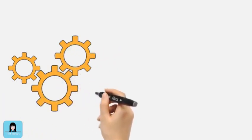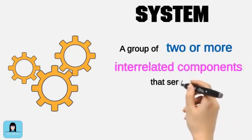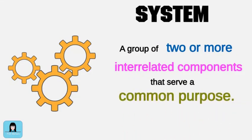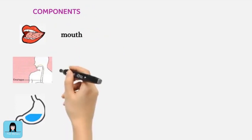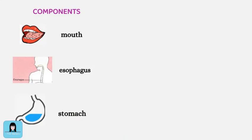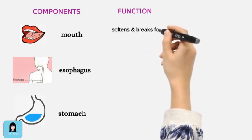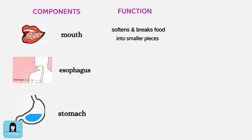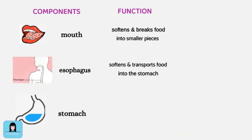The term system means a group of two or more interrelated components or subsystems that serve a common purpose. To better understand the term system, let us examine the digestive system in your body. The digestive system is made up of three components: the mouth, the esophagus, and the stomach. The mouth softens and breaks the food into small pieces. The esophagus softens further and transports the food into the stomach. The stomach melts down the food using acid and extracts the nutrients from it.